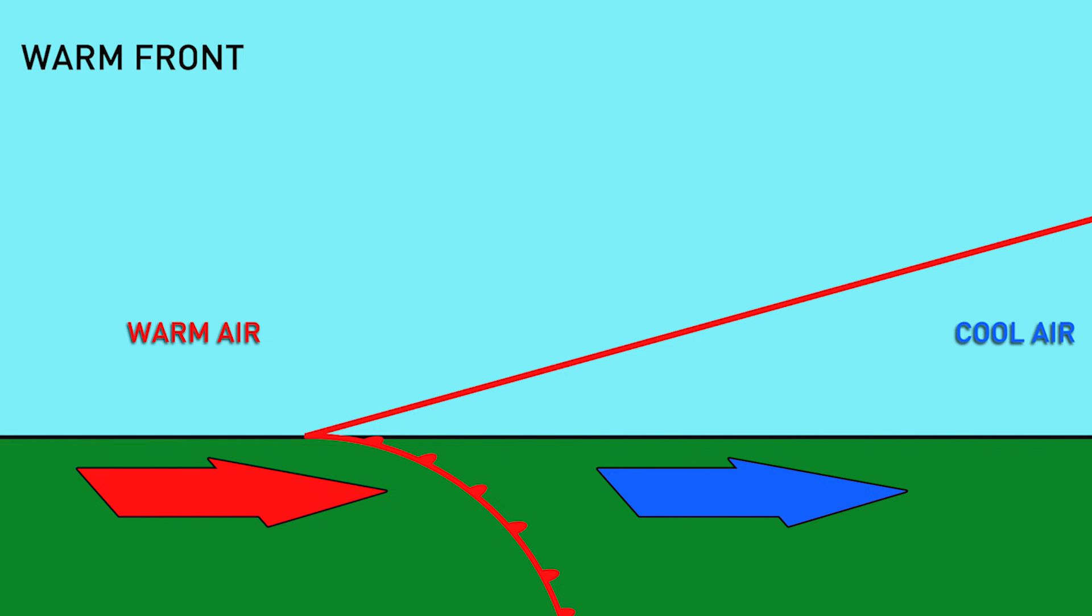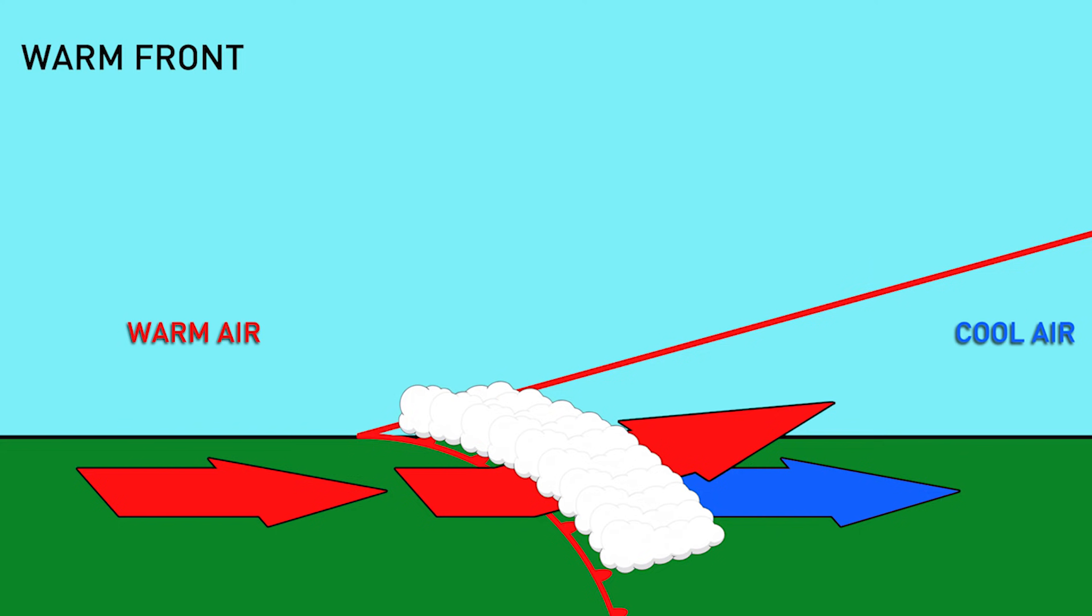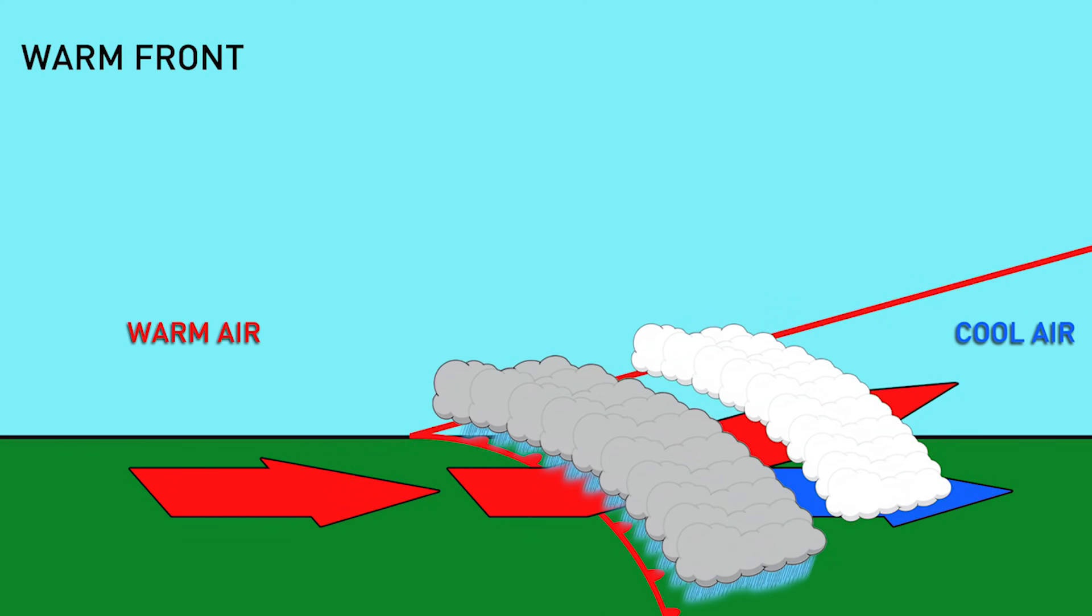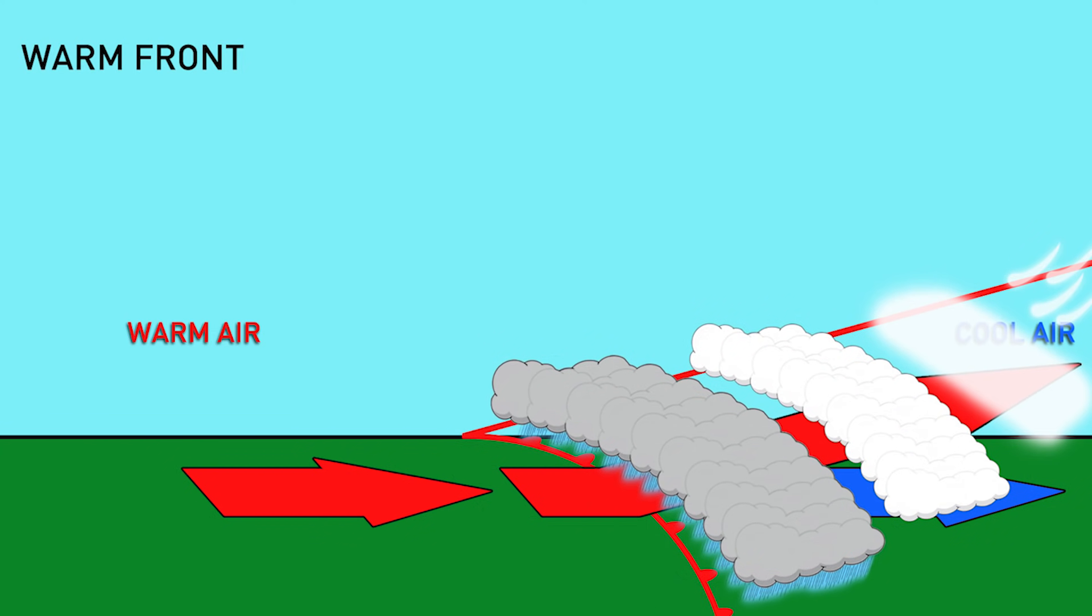If a warm, humid air mass pushes into a cool, drier air mass, we have a warm front. With warm air overtaking cooler, denser air, the warm air is forced upward, but at a much gentler slope than with a cold front. This produces widespread cloud and precipitation along the front and just ahead of it.